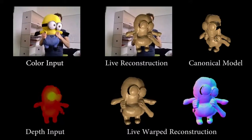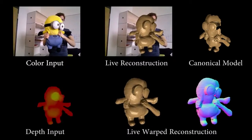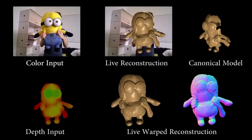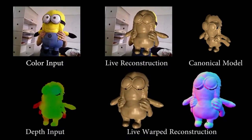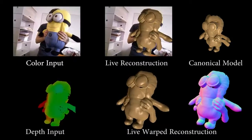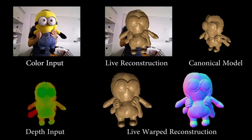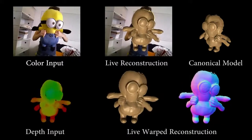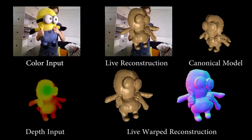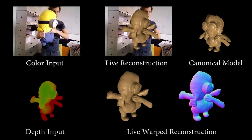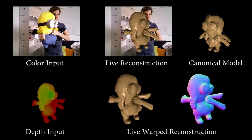We present a novel method for the real-time reconstruction of non-rigid scenes. Our system uses depth and color input from a single commodity RGBD camera to reconstruct the geometry and motion of arbitrary scenes.